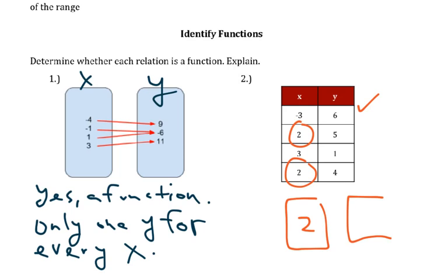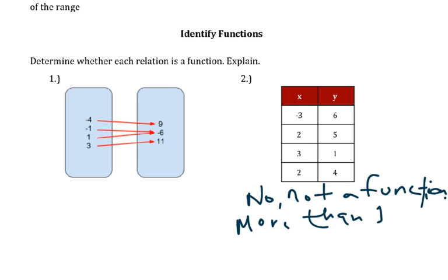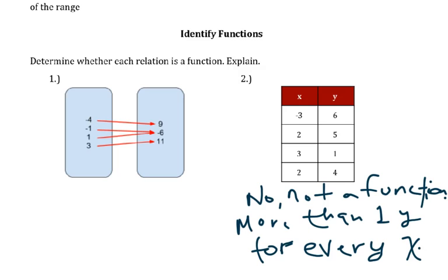Which means that if this was a mapping and I had two here and then I had all my y values over here, two could give me five, two could also give me four. And so because I get two outputs, I'm going to say no, not a function. And then I would say two outputs for one x, or I could say more than one y for every x.